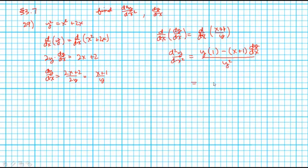Let's see if we can do a little clean up there. y minus x plus 1, and then we'll replace this dy dx with what dy dx is equal to which is x plus 1 over y, and this whole thing is over y squared.